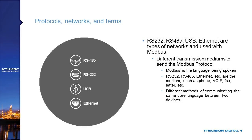Now let's look at protocols, networks, and terminology you'll hear when talking Modbus. Modbus sends digital communications — bits packaged into Modbus packets — but the question is how does one device actually send information to another? Since Modbus is an application-level protocol, it's about how zeros and ones get read, not how they get transmitted physically. The most common physical networks in the process industry are RS-232, RS-485, USB, and Ethernet.